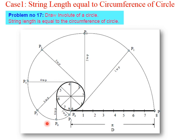The procedure is straightforward. First, note the circle diameter and the string length if given; otherwise by default the string length equals the circumference. Draw a circle of the given diameter — in this case 50 mm. After drawing the circle, divide it into equal parts in the same manner as we did for cycloid: points 1, 2, 3, 4, 5, 6, 7, 8 — eight equal divisions.